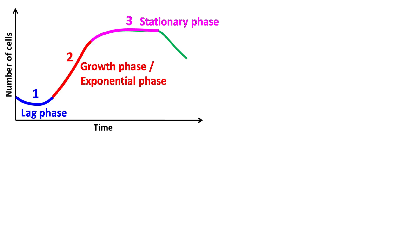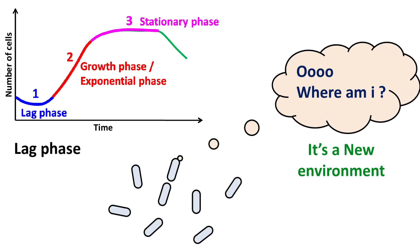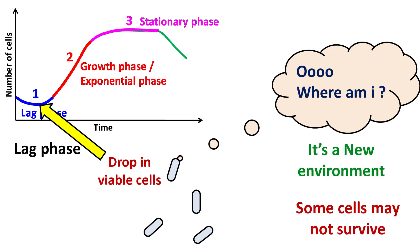Lag phase is a stage where the cells try to adjust themselves in the new environment. It is also possible that some cells may not survive the new environment, hence the graph shows drop in the number of viable cells.